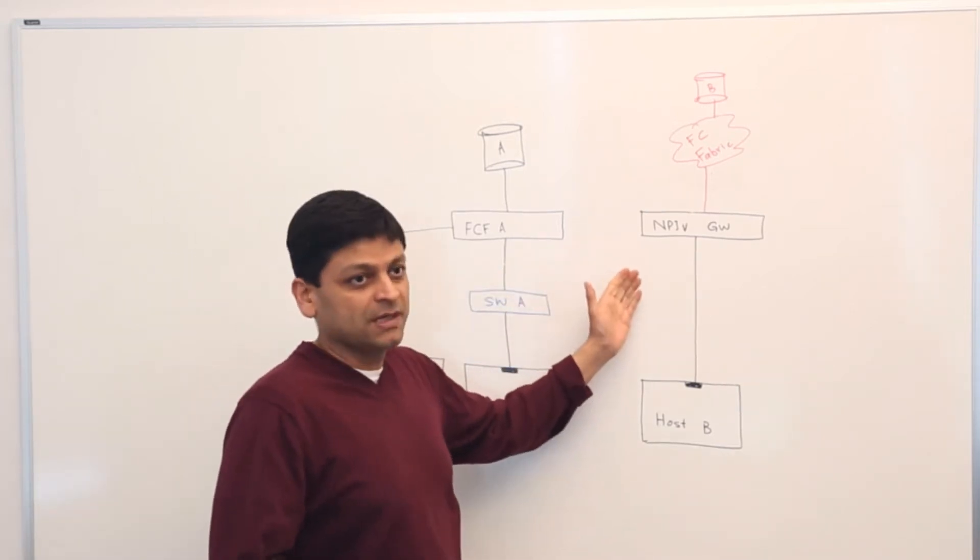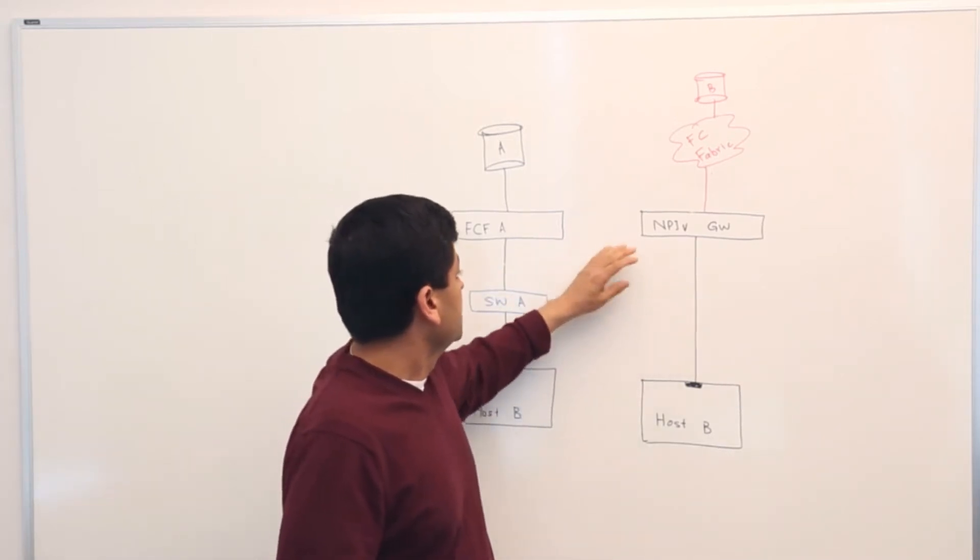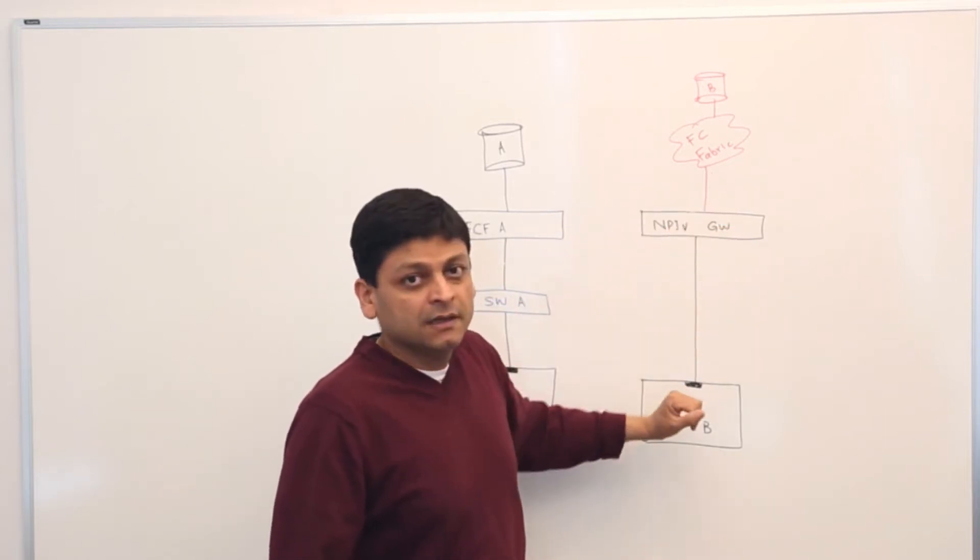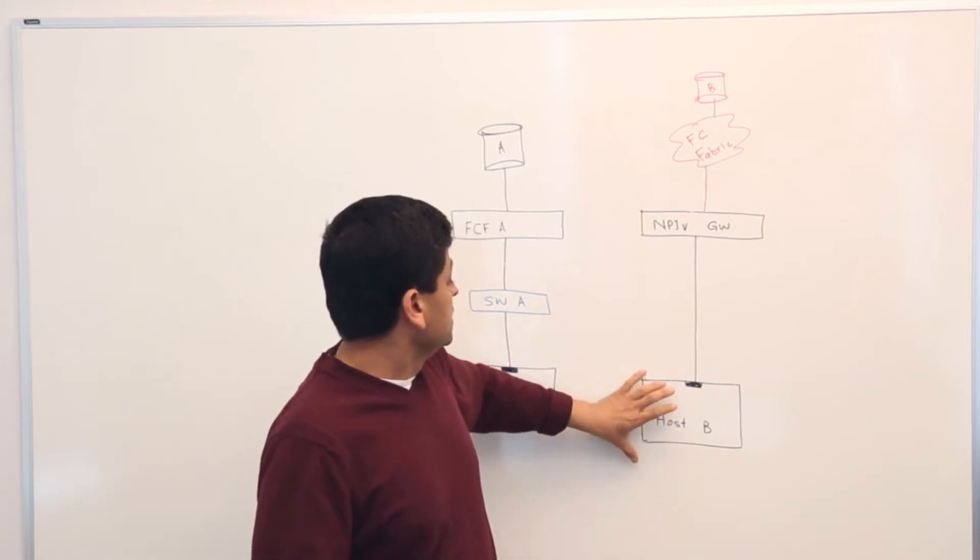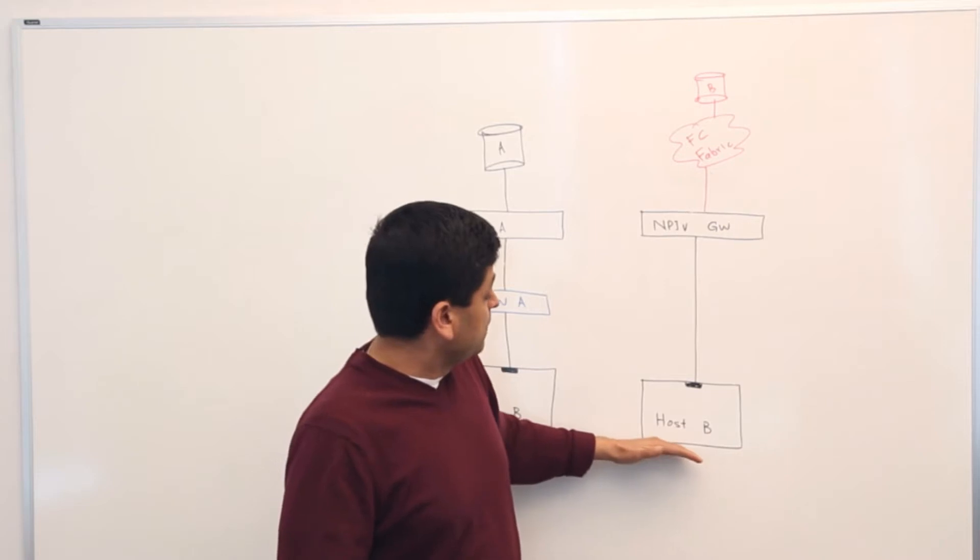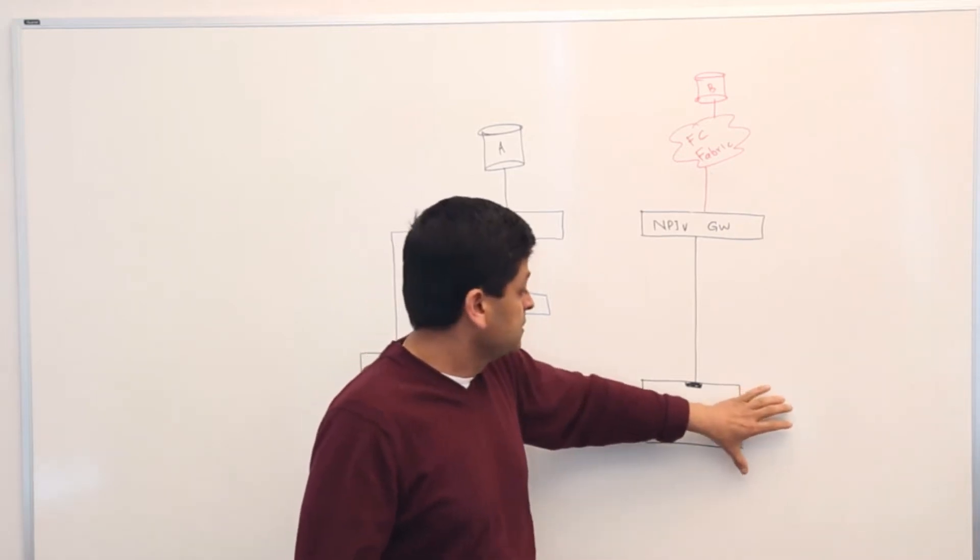A second typical topology that's used is you would have what we call NPIV or FCoE gateway. And you would have Ethernet network on the bottom where you have all the Ethernet hosts or initiators hooked up.